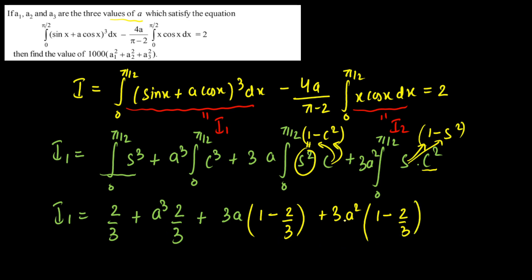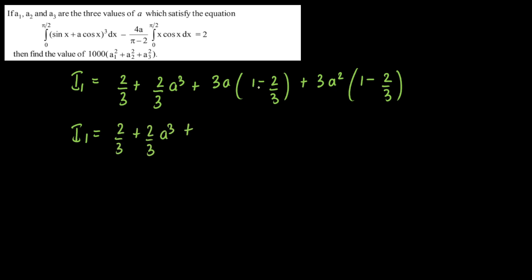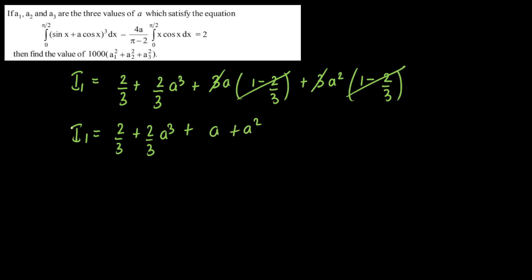Now simplifying I1: the integral of sin³x is 2/3, and a³ times the integral of cos³x is (2/3)a³. The 3a term gives 3a·(1/3) = a, and the 3a² term gives 3a²·(1/3) = a². So I1 = 2/3 + (2/3)a³ + a + a².